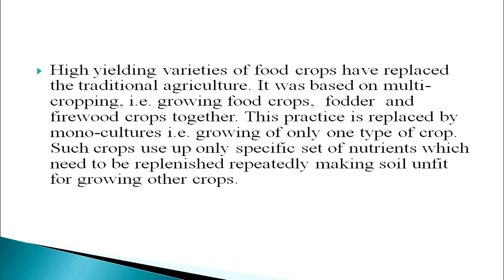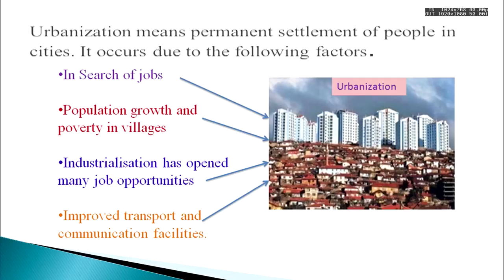High-yielding varieties of food crops have replaced traditional agriculture, which was based on multi-cropping — growing food crops, fodder, and firewood crops together. This practice has been replaced by monoculture, that is, growing only one type of crop. Such crops use up only a specific set of nutrients which need to be replenished repeatedly, making the soil unfit for growing other crops.